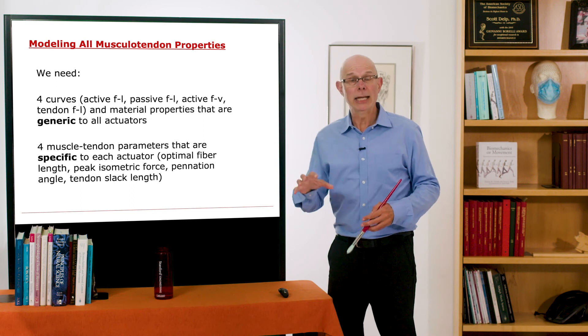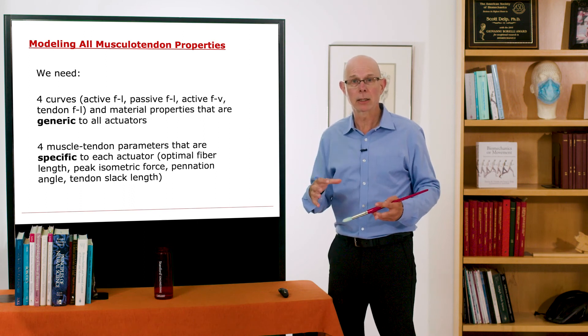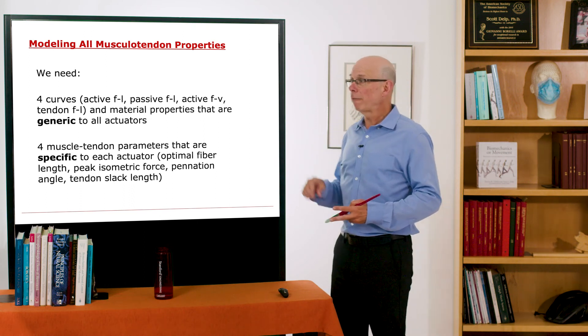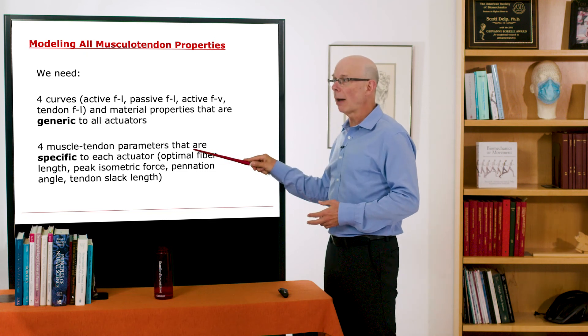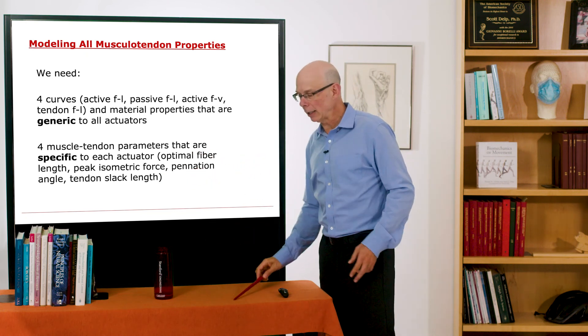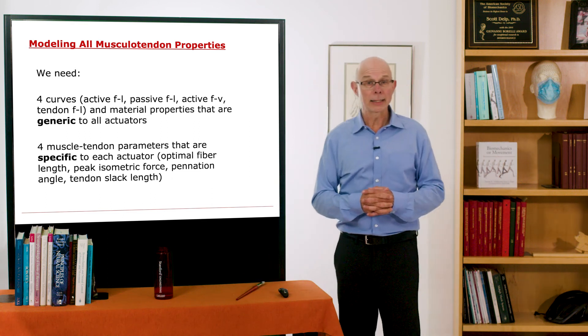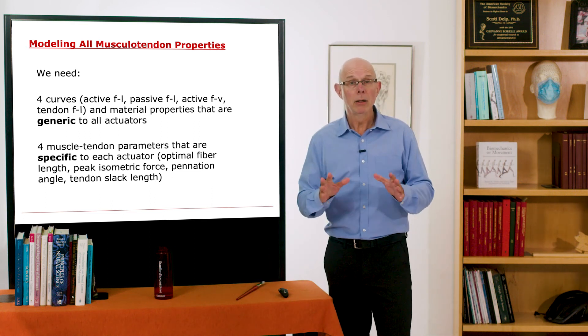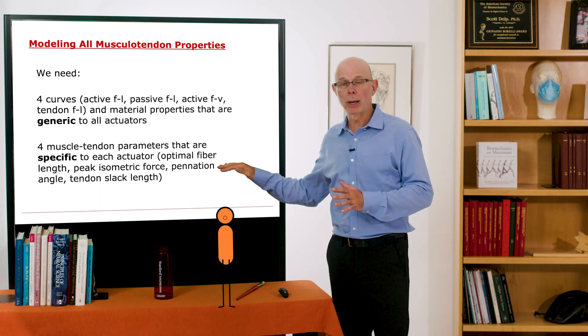Then if we want to model a specific muscle tendon complex, we need 4 specific properties. Optimal fiber length, peak force, pennation angle, and tendon slack length. That's it. So we can model any muscle with those 4 parameters.